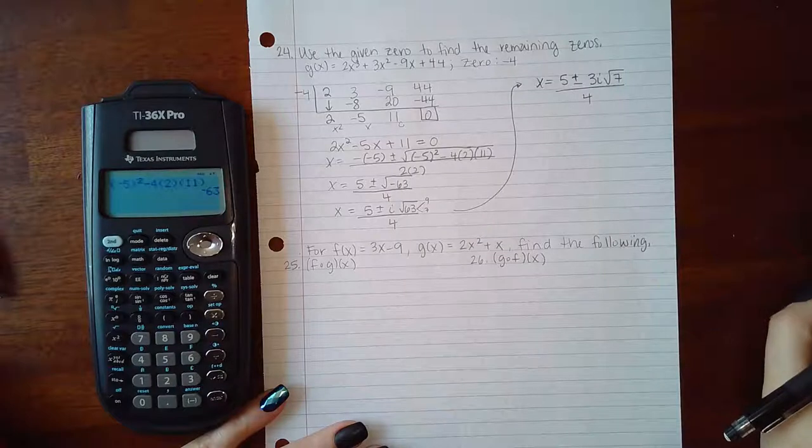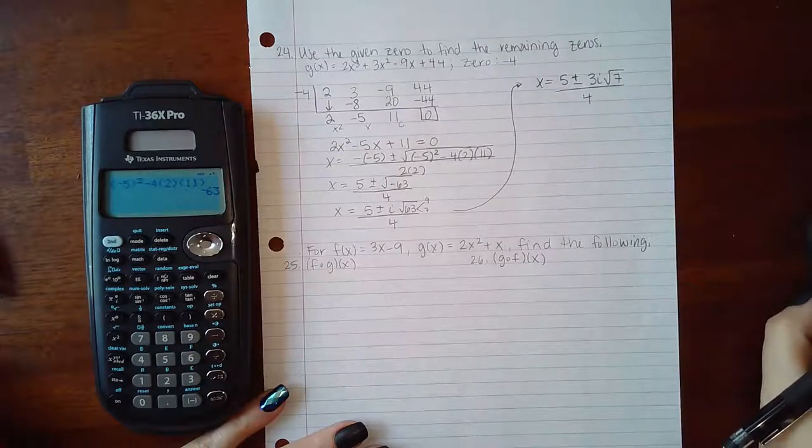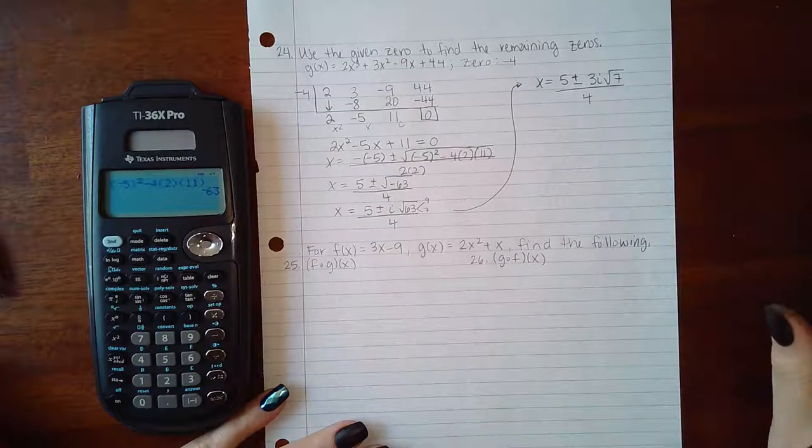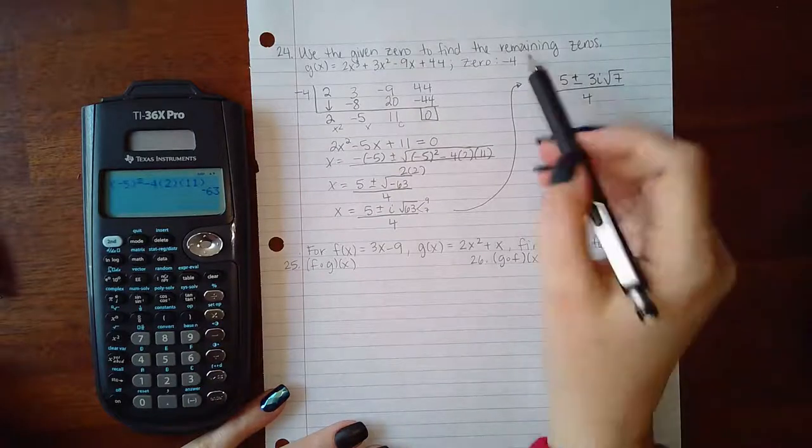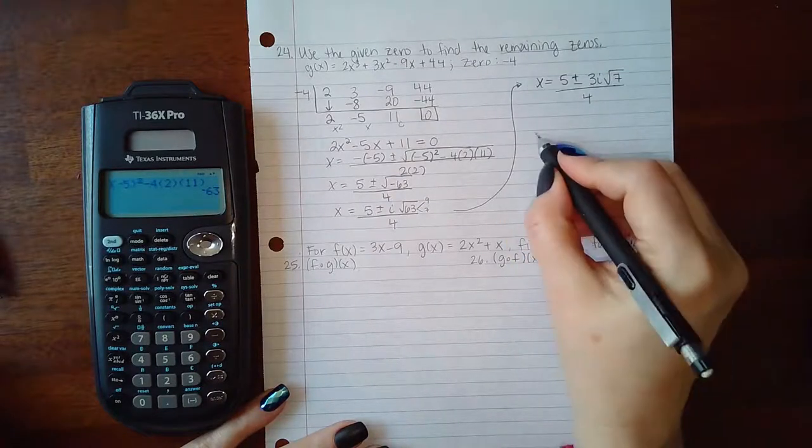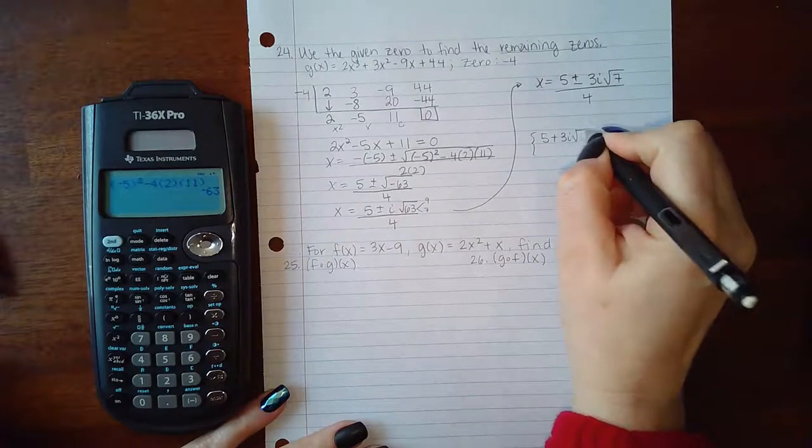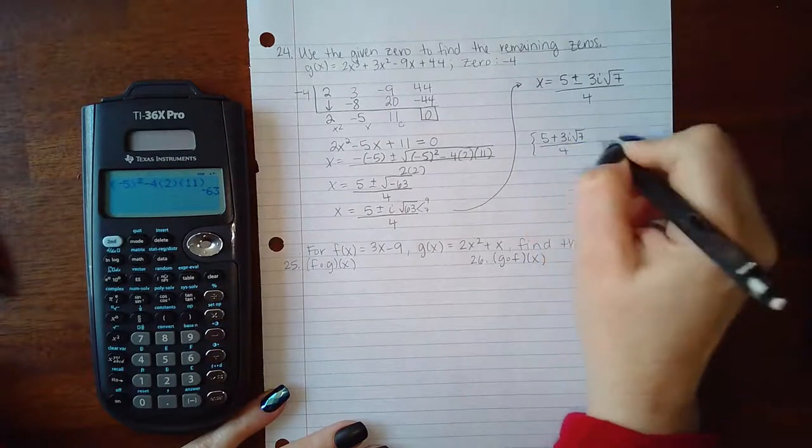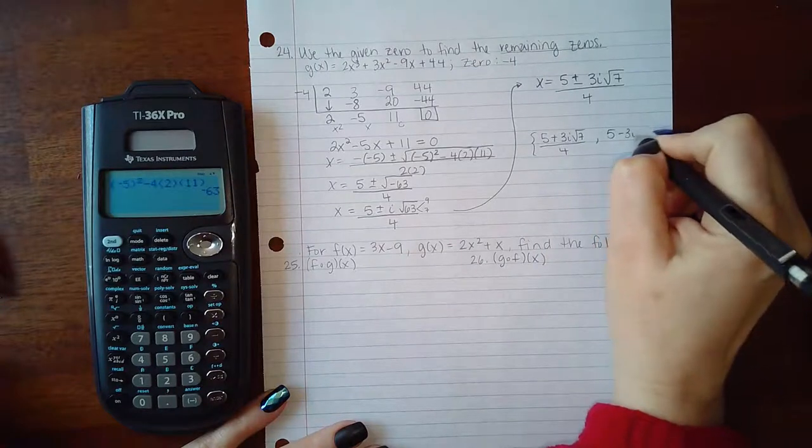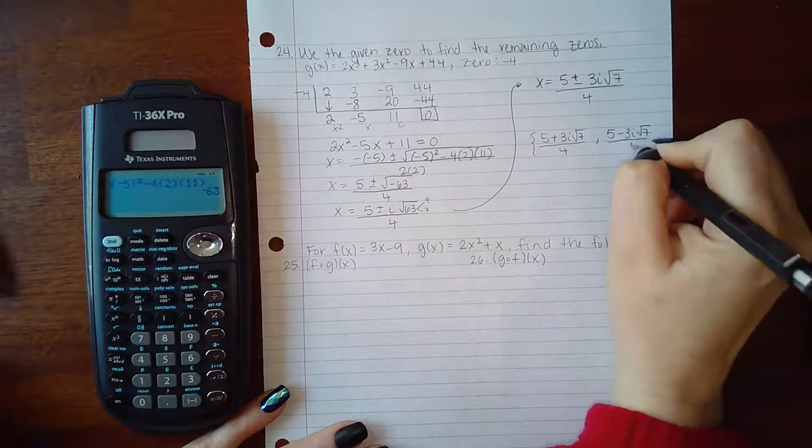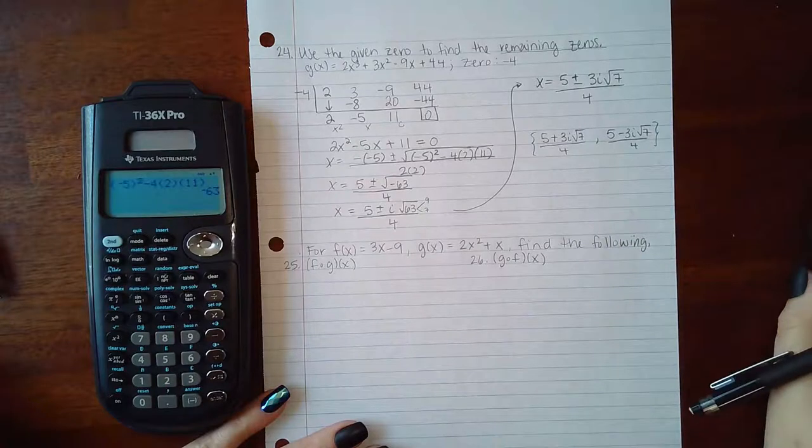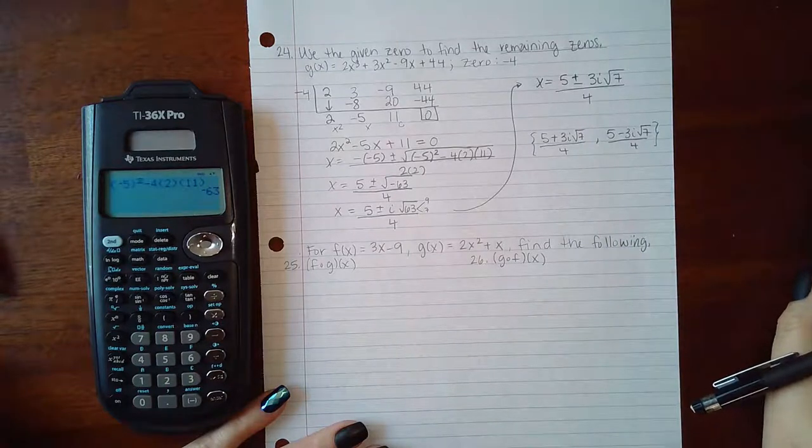So I actually have two solutions here. We were already given one zero and we were only asked to find the remaining zeros. So our answers are 5 plus 3i square root 7 over 4 and 5 minus 3i square root 7 over 4. And so those are our two solutions.